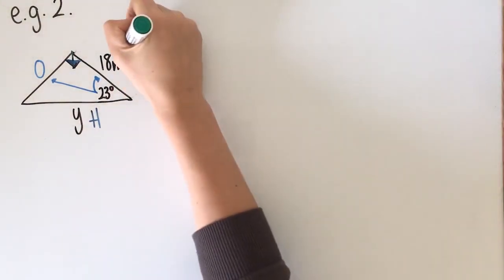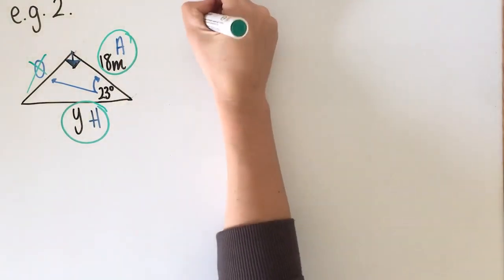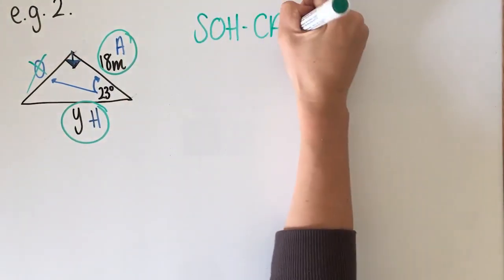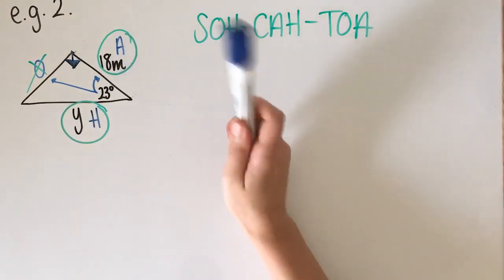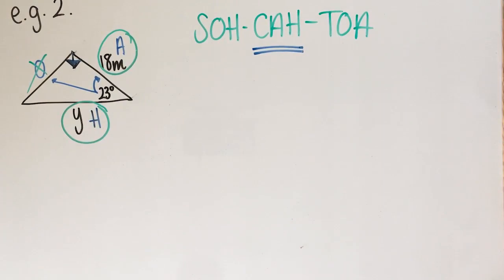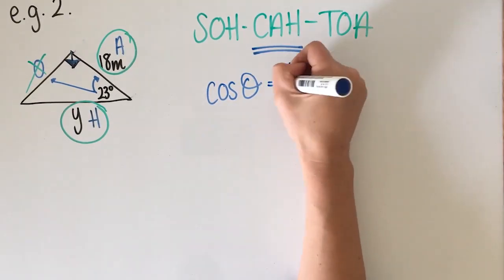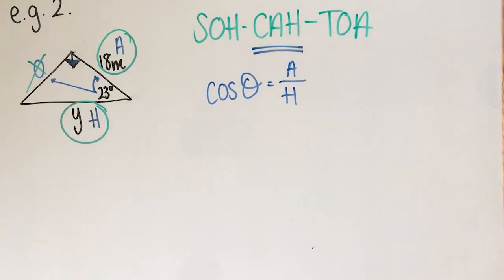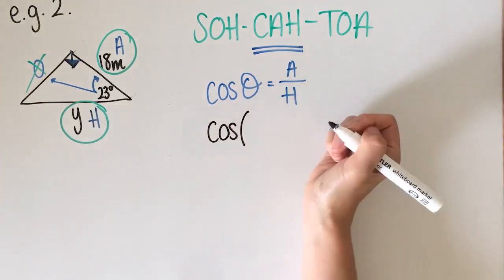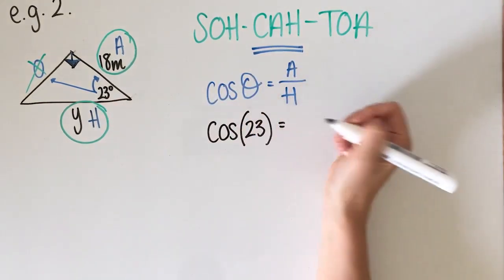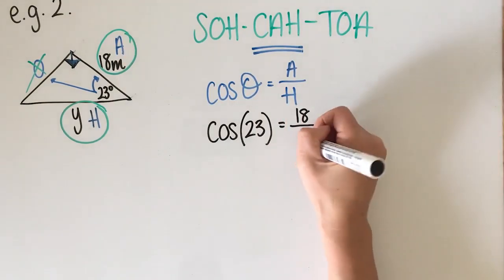I know that I need this side and this side — the third side is not important. So I write out SOH-CAH-TOA to decide which ratio to use. I've got an A and an H, so that tells me I need cosine. Cos of an angle is A over H. Cos of 23 equals 18 over Y.